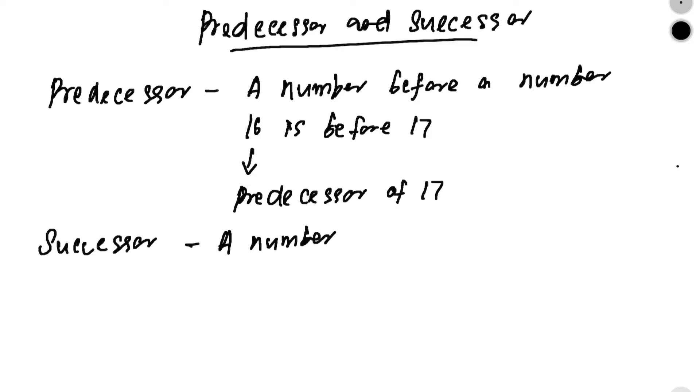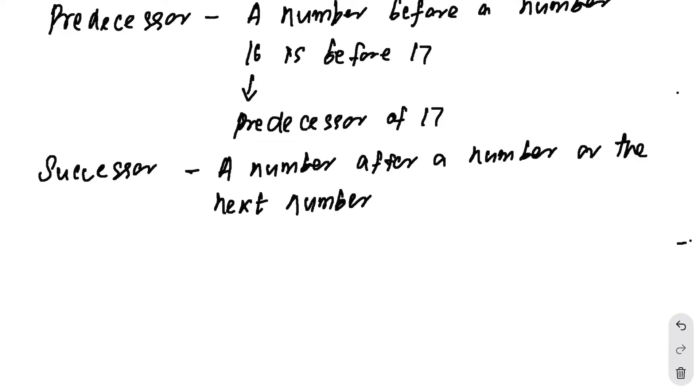Likewise, a successor is a number after another number or the next number. So for example, the next number of 16 is 17. And if you add 1 to that number, that is 16, you get its successor, that is 17. That is 16 plus 1 is 17. Therefore, 17 is the successor of 16.